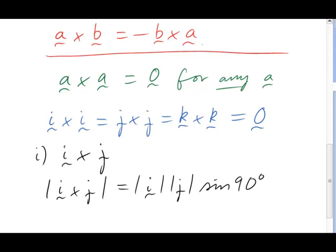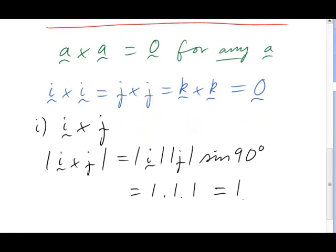But remember, i and j are at right angles to each other. i is along the x-axis and j along the y-axis. That means that the angle between them, 90 degrees, contributes sine of 90 equals 1. i and j are themselves unit vectors, so their lengths are both 1. So in fact, the magnitude of i cross j must be 1. That means that it's a unit vector.